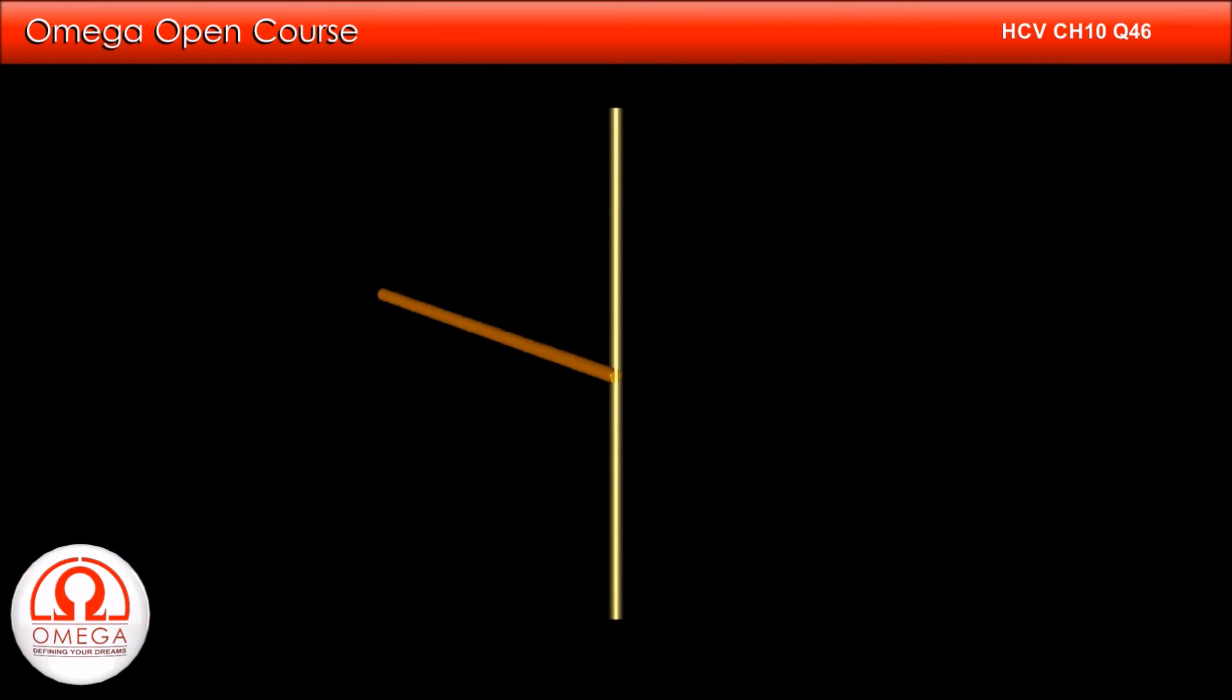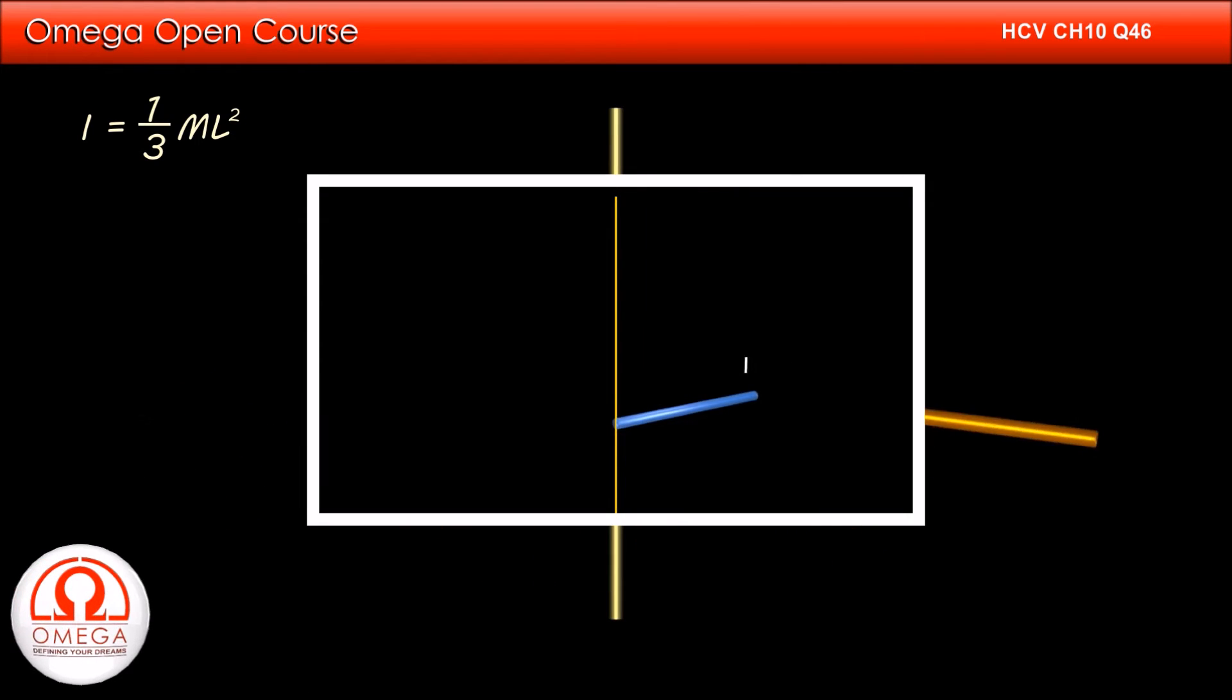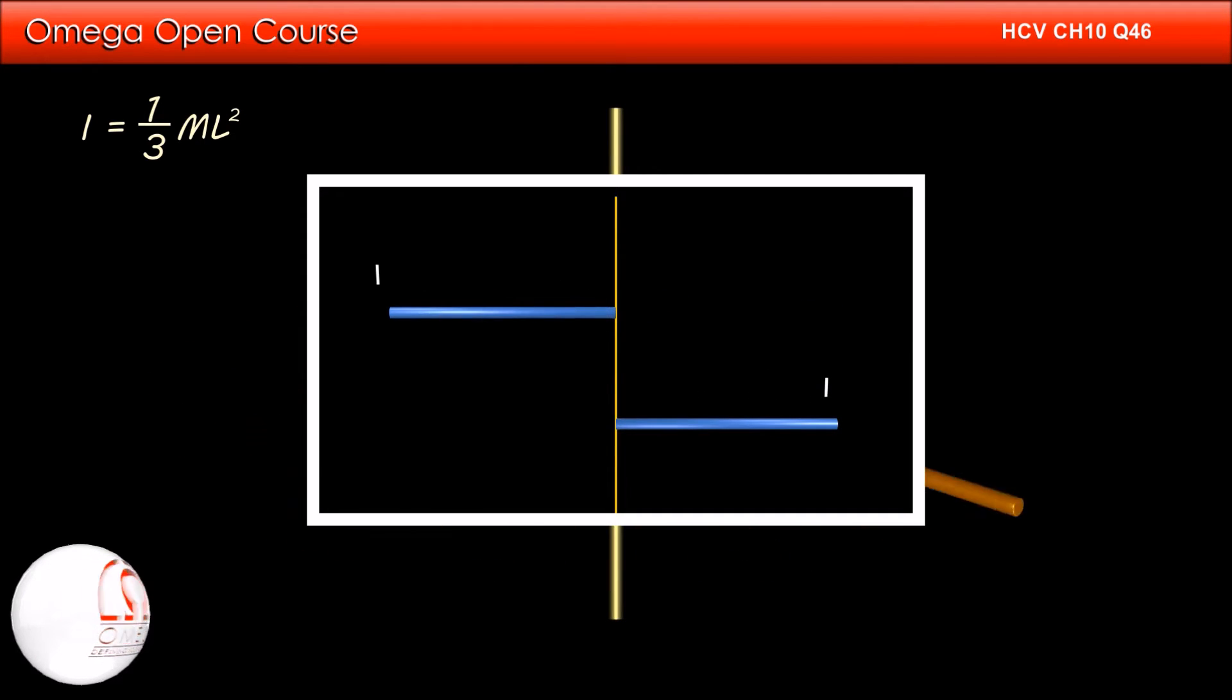The moment of inertia of a rod about an axis perpendicular to it and passing through its end is given by I = (1/3)ML². If you want to know how to calculate the moment of inertia, you may watch our video on calculation of moment of inertia of rod. The link for the video is shown on the screen and given in the descriptions below.